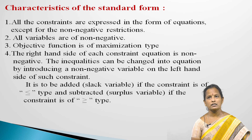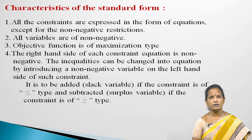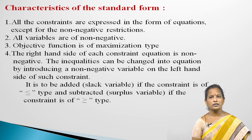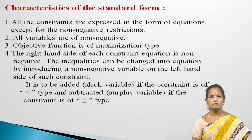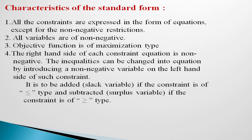Characteristics of the standard form: All constraints are expressed in the form of equations except for the non-negativity restrictions. All variables are non-negative. The objective function is of maximization type. The right-hand side of each constraint equation is non-negative. Inequalities can be changed into equations by introducing a non-negative variable on the left-hand side — adding a slack variable if the constraint is of less than or equal to type, and subtracting a surplus variable if the constraint is of greater than or equal to type.